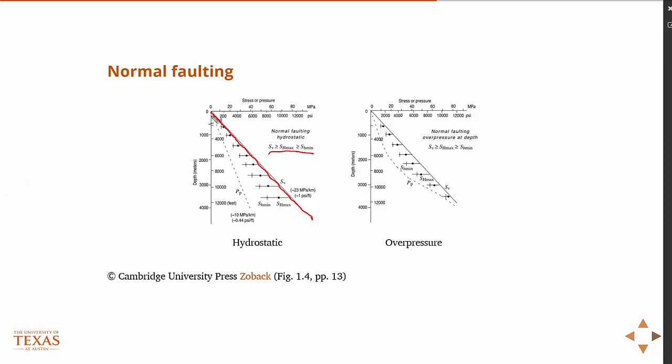The pore pressure we know has to be less than the maximum stress difference, otherwise you'd have hydraulic fractures. So these are the upper and lower bounds in the normal faulting regime. And then in between we have SH max and SH min.